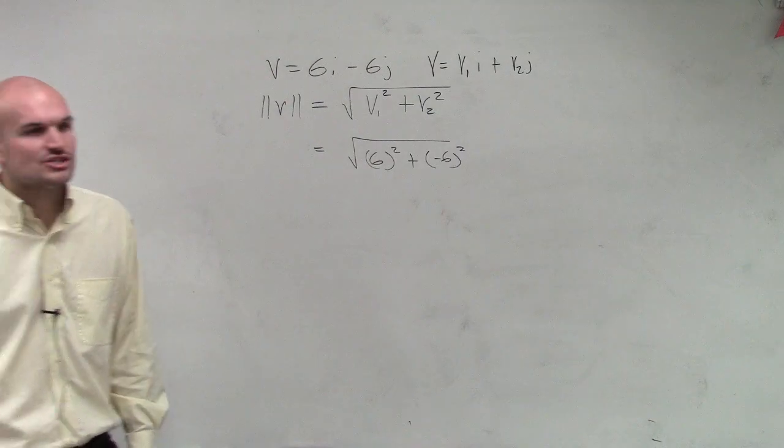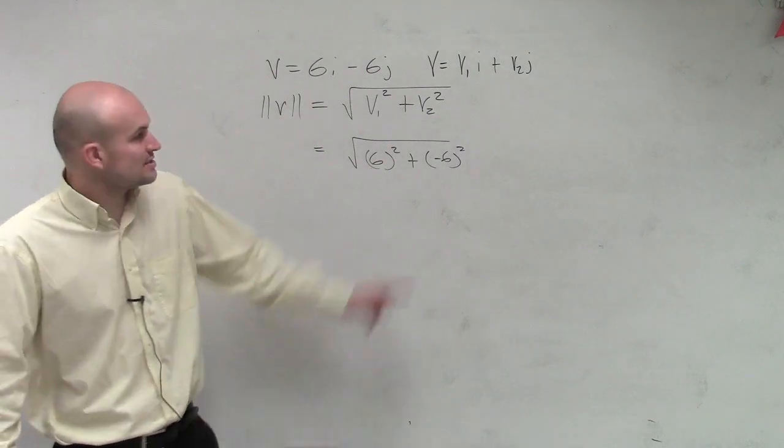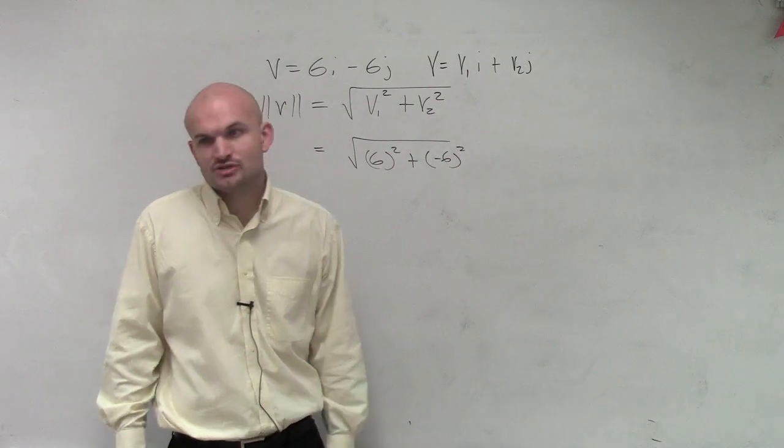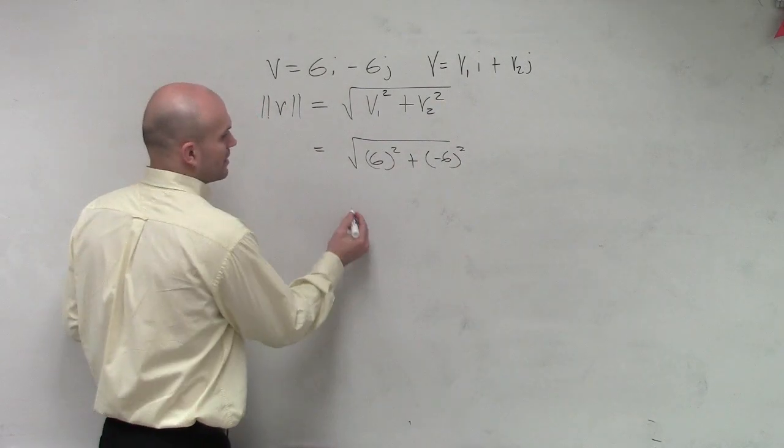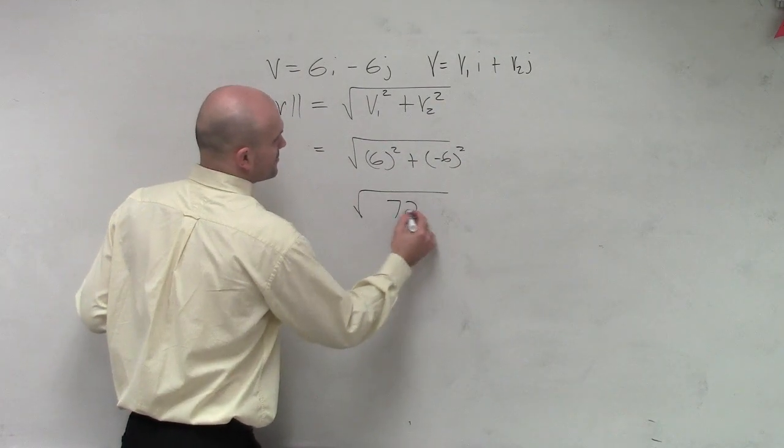You're not putting the i's and the j's in there. It's only the coefficients. It's v1 times i plus v2 times j. Therefore, I'm going to get the square root of 72.